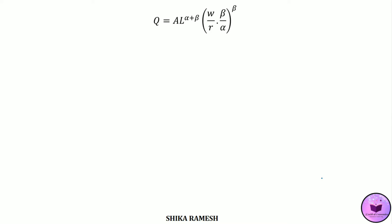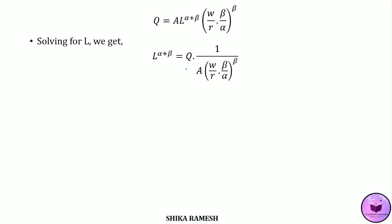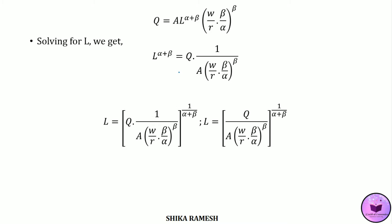From this equation, solving for L, we get L^(α+β) = Q·(1/A)·(w/r)^β·(β/α)^β. Bringing the exponent (α+β) to the right-hand side, we get: L = [Q·(1/A)·(w/r)^β·(β/α)^β]^(1/(α+β)). This can be further simplified and written as L = [(Q/A)·(w/r)^β·(β/α)^β]^(1/(α+β)).